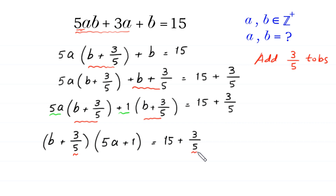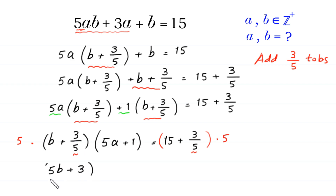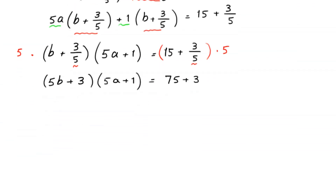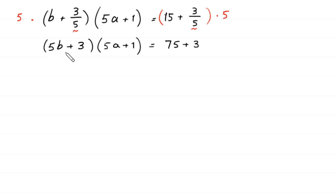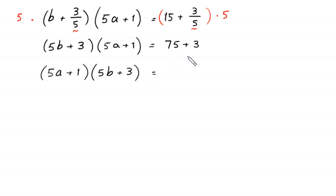Because both sides involve fifths, we multiply both sides of this equation by 5. This gives us (5b plus 3) times (5a plus 1) is equal to 5 times 15 plus 3, which is 75 plus 3, equal to 78.